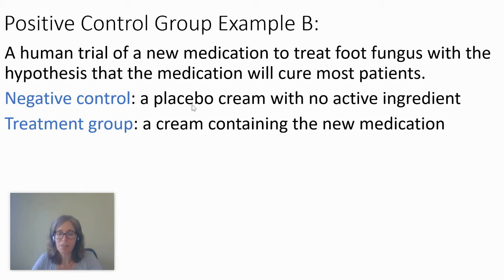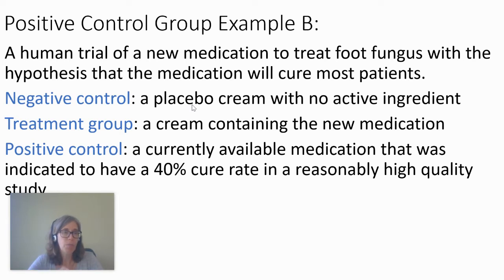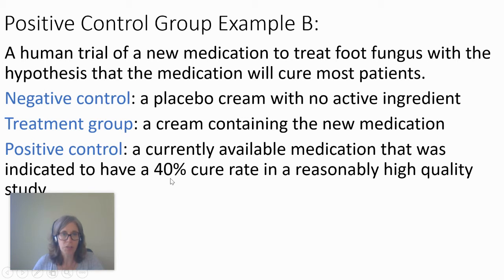Sometimes placebos do work because patients think they're being cured, and they actually work to some degree — that's why it's really important to include them. The positive control would be some available medication that already has a known cure rate, maybe something that's more expensive or has some side effect, which is why you're testing this new treatment group. Again, the negative control is pulling something out — in this case, removing the medicine. The positive control is a group where you're expecting the hypothesis to be true. The hypothesis is that the medication will cure most patients; the positive control only cures maybe 40%, but it is curing some percentage of patients.